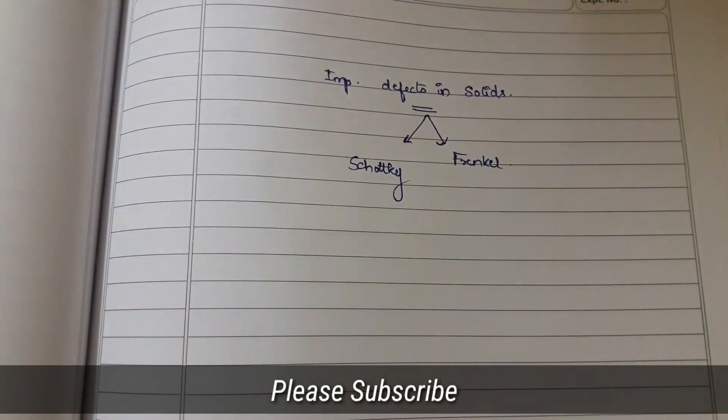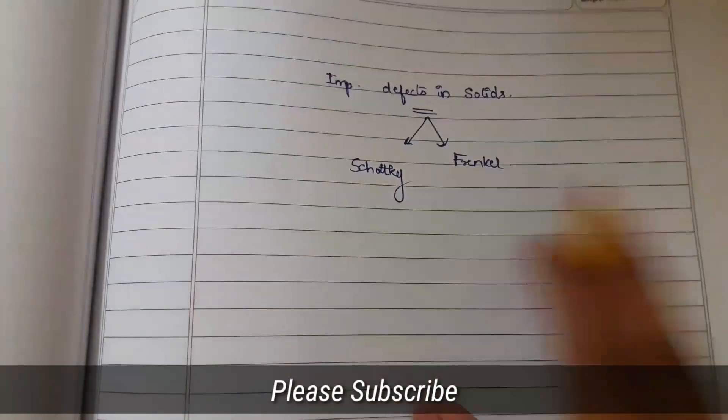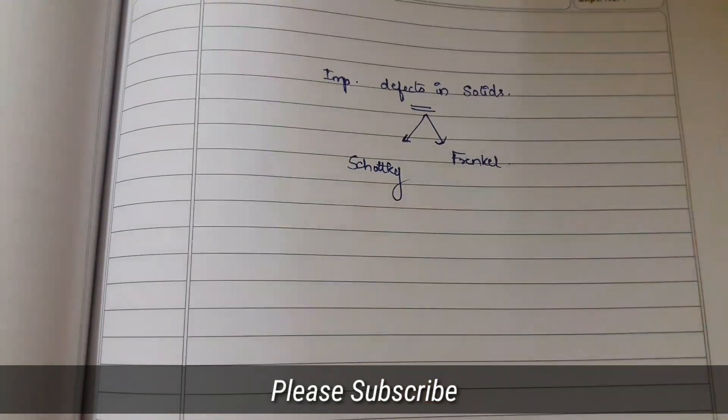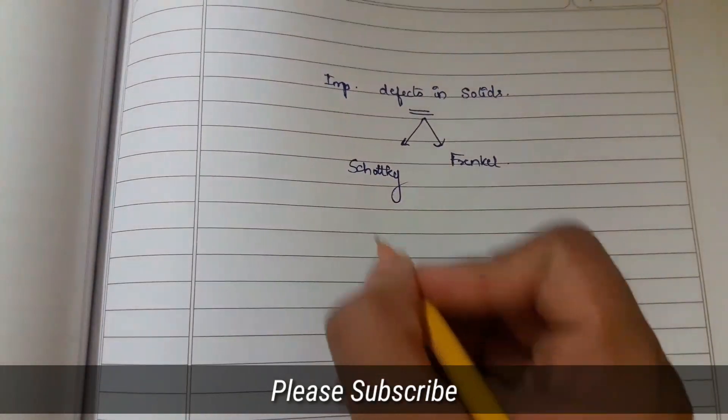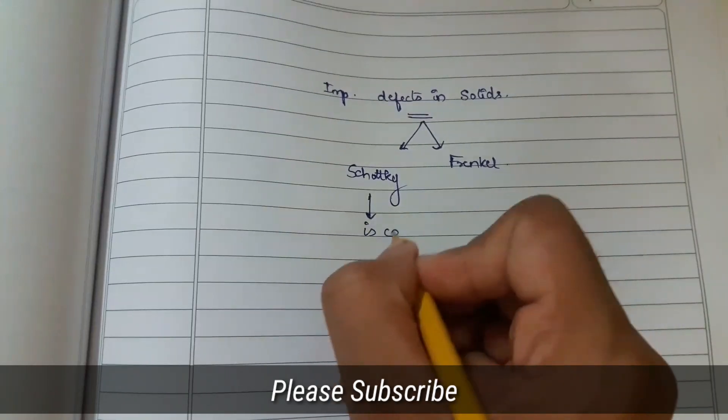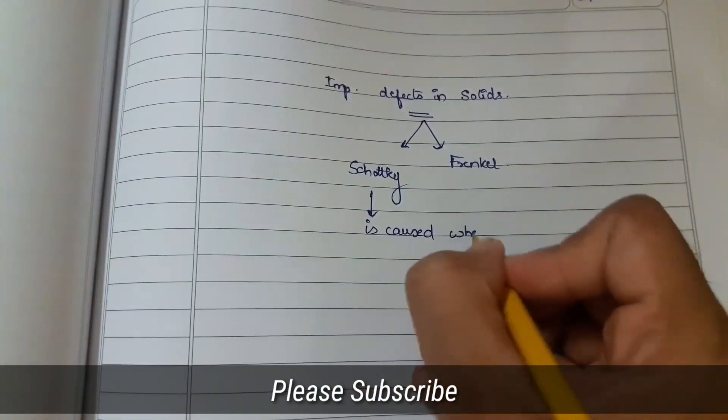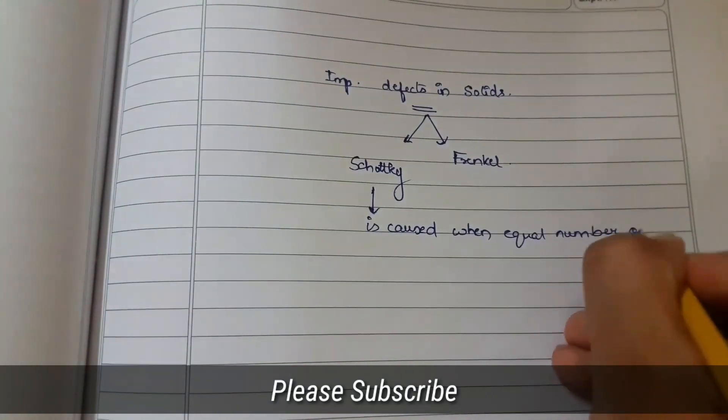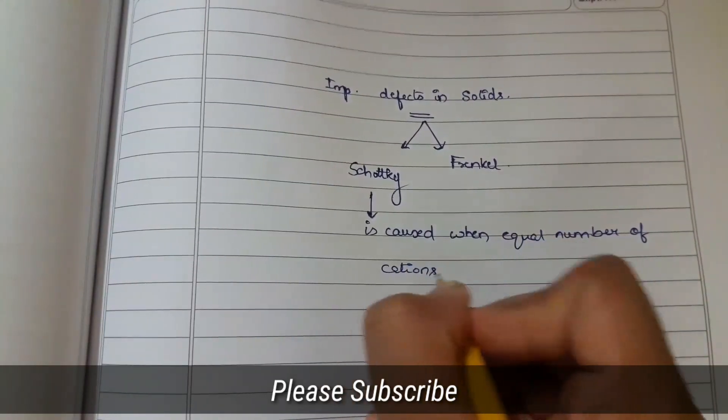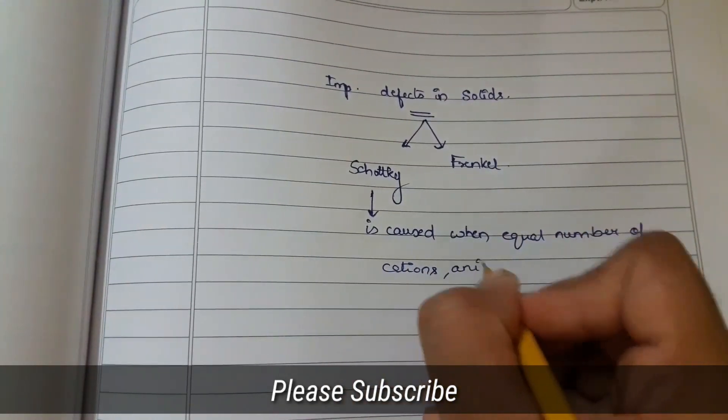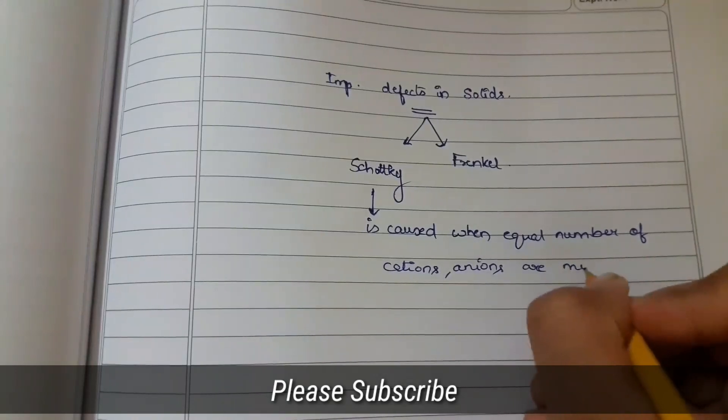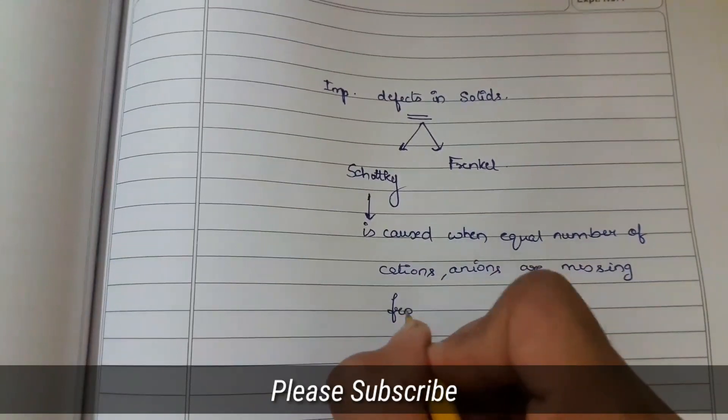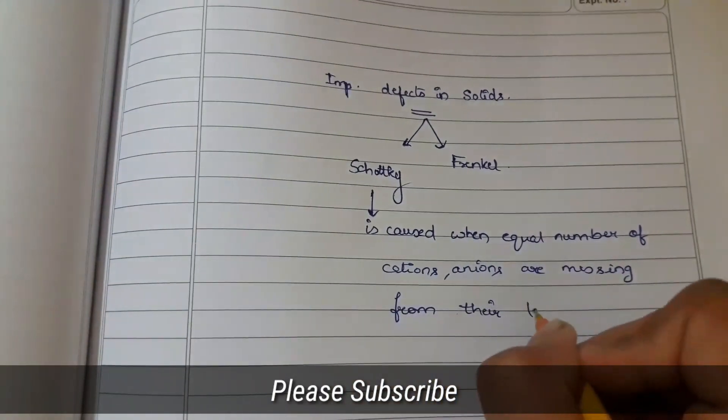What is Short Key Defects and what is Frankel Defects? Both are very easy definition type of questions, but it is also important in chapter 2. So what is Short Key Defects?